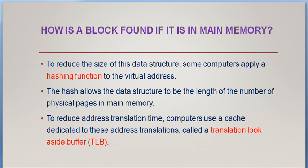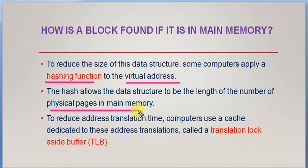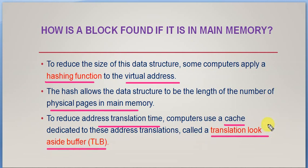To reduce the complexity of address translation, some computers apply a hashing function to the virtual address. The hash allows the data structure to be the length of the number of physical pages in main memory. To reduce address translation time, computers use a special cache dedicated to address translation called the Translation Lookaside Buffer, or TLB. A special cache is associated with the page table or segment table, making address translation easier.